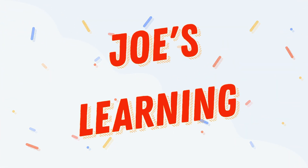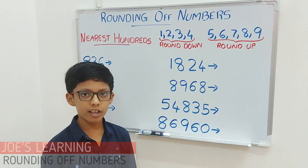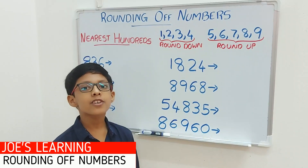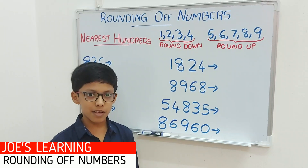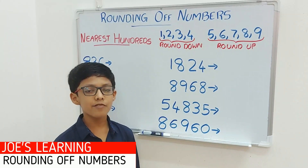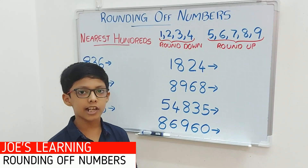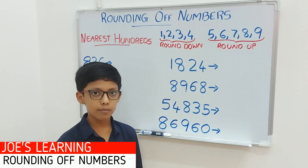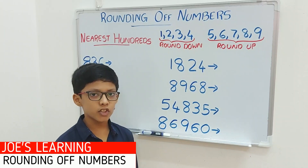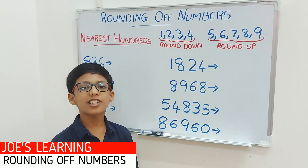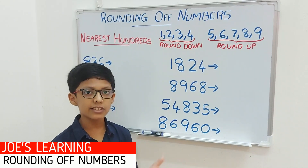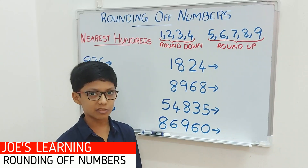Let's get started. When we are rounding off a number to the nearest hundreds, we look at the digit in the tens space. If the digit in the tens space is lesser than 5, then we need to put a 0 in the ones and tens space, leaving the digits in the other places as it is. But if the digit in the tens space is greater than or equal to 5, then we need to put a 0 in the ones and tens space and add 1 to the hundreds place.